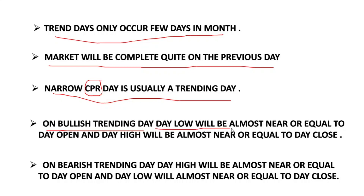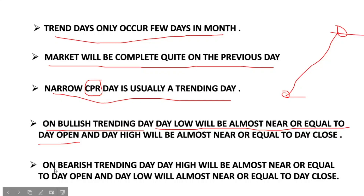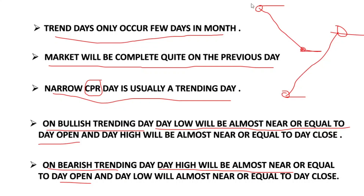On a bullish trending day, the day low will be almost equal to the day open, and the day high will be almost equal to the day close — meaning there is one-directional upward movement. On a bearish trending day, the day high will be almost equal to the day open and the day close will be almost equal to the day low. This is how the market will look on a trending day.